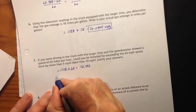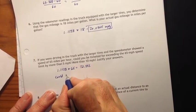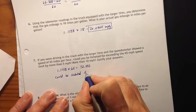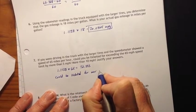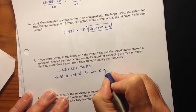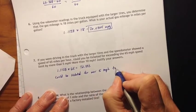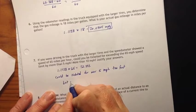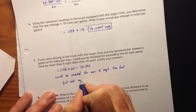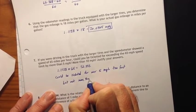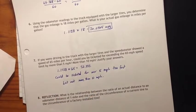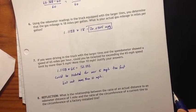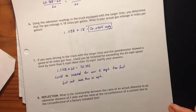So could be ticketed for over 5 miles per hour too fast, but not more than 10 miles per hour.